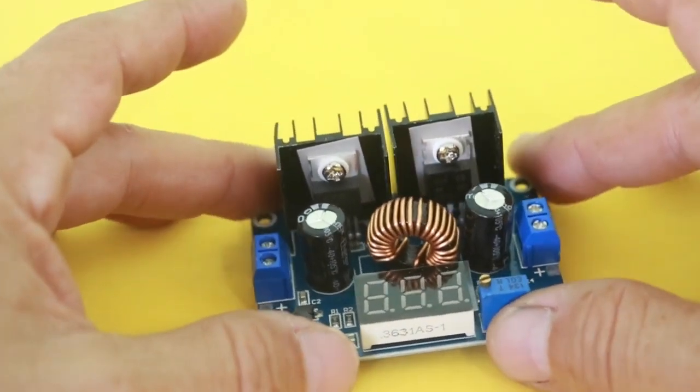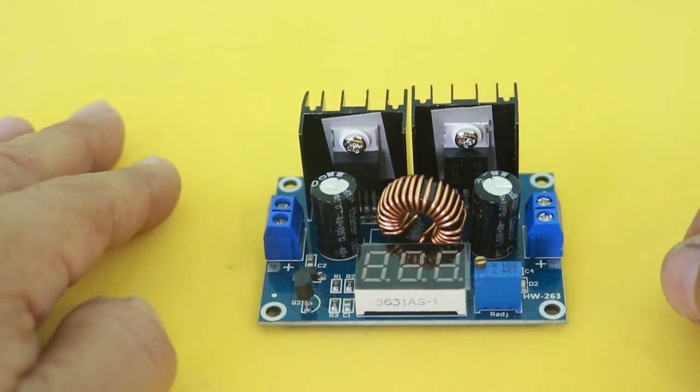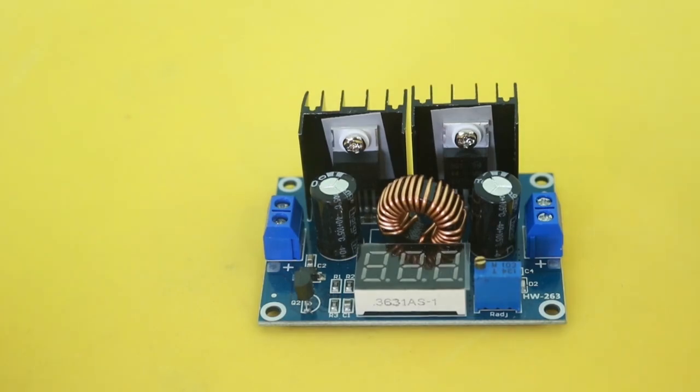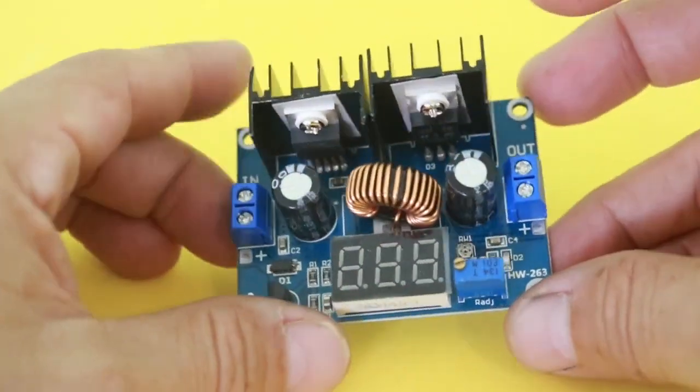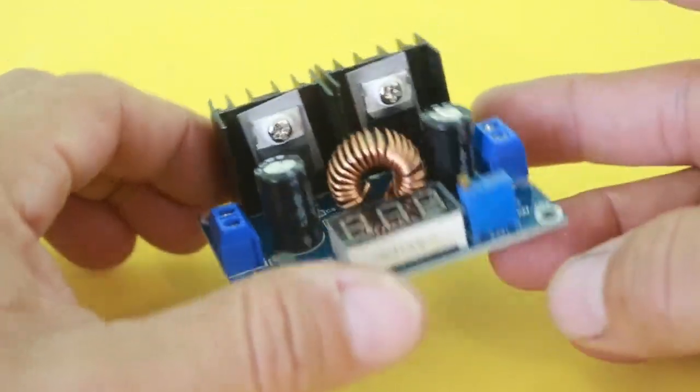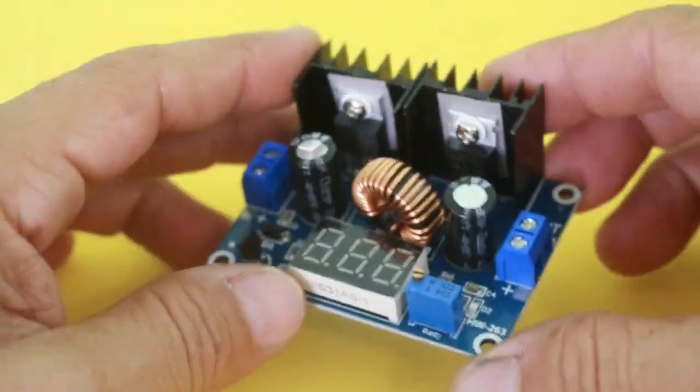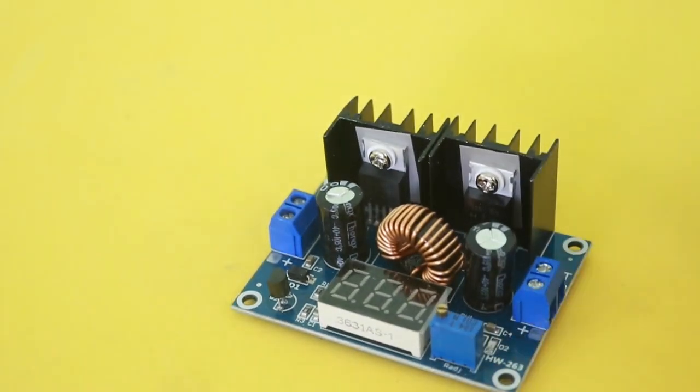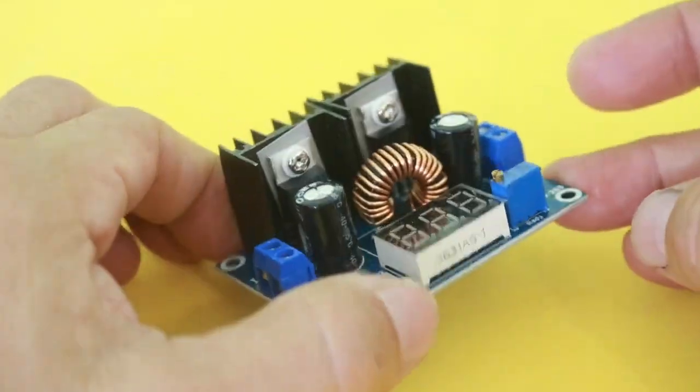For example, if you convert from 24 to 12 volts DC, half of the input power will be lost as heat. On the other hand, these modules promise an efficiency of at least 95 percent, but I will check that in a minute. They are very cheap. You can buy this module on Aliexpress for a couple dollars, but locally I bought this module for 6 dollars, which is still very cheap.